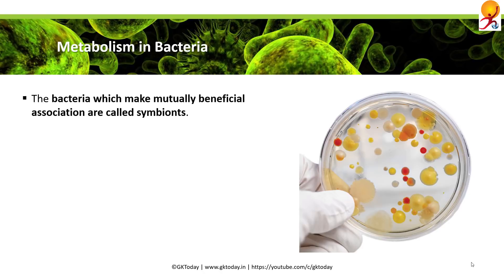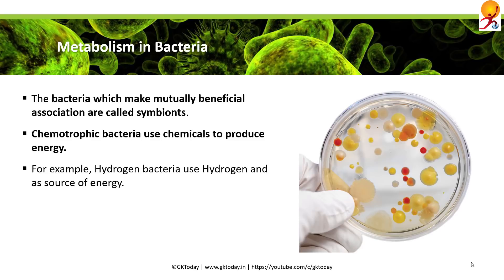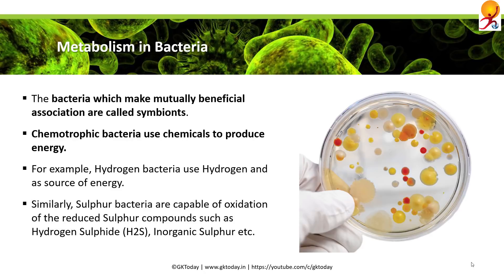Bacteria that make mutually beneficial associations are called symbionts. Chemotrophic bacteria use chemicals to produce energy — an example would be hydrogen bacteria, which use hydrogen, and sulfur bacteria, which oxidize sulfur and reduce it to hydrogen sulfide or inorganic sulfur.